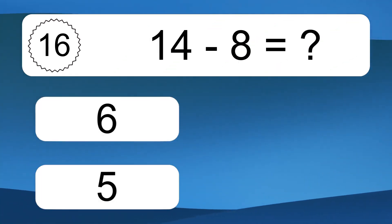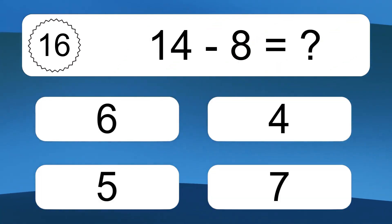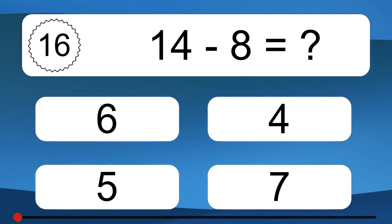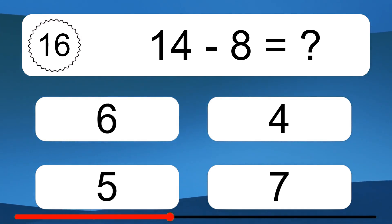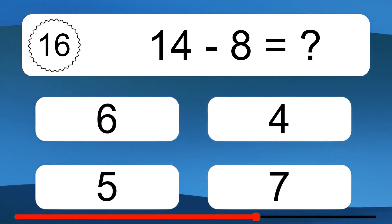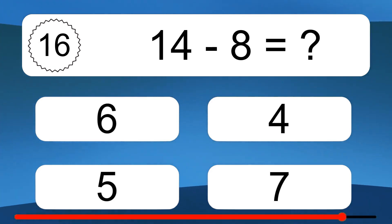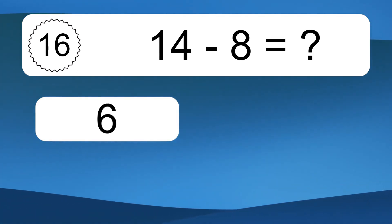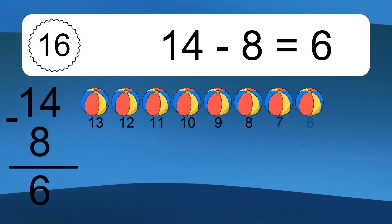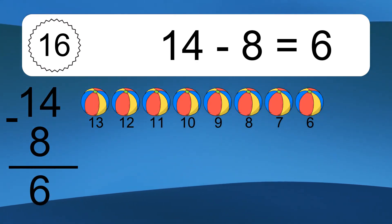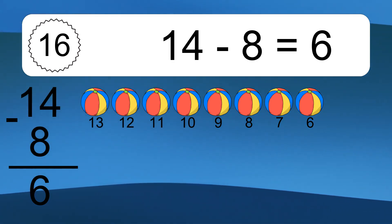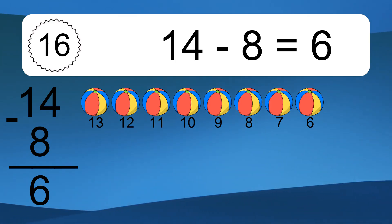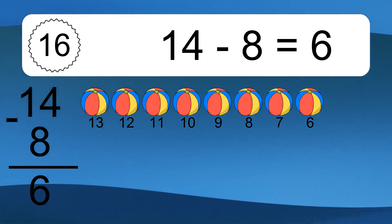14 minus 8 equals what? 14 minus 8 equals 6. Let's count it: 13, 12, 11, 10, 9, 8, 7, 6.